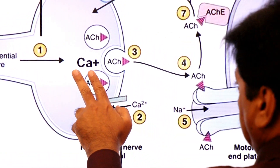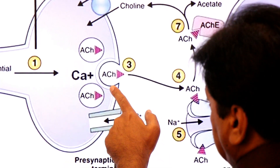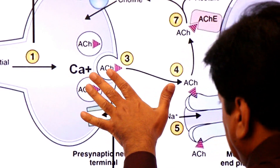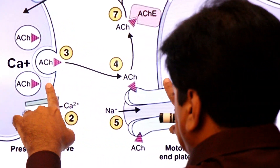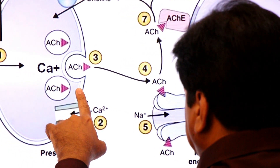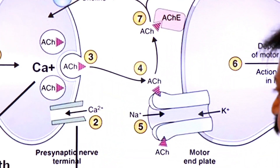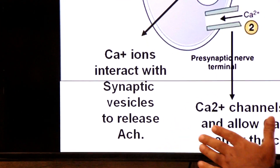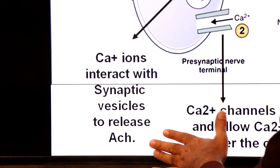Step 3: the calcium ions fuse with the neurotransmitter vesicle containing acetylcholine. The calcium ions stimulate the release of acetylcholine into the synaptic cleft — the gap between the motor neuron and the muscle membrane.